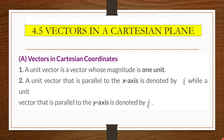A unit vector parallel to the x-axis is denoted by i-vector. For example, a vector moving to the right parallel to the x-axis with magnitude 1 unit is the i-vector. Moving to the left, it is written as negative i-vector. A unit vector parallel to the y-axis is denoted by j-vector — moving up is j-vector, moving down is negative j-vector.